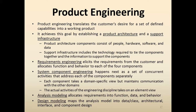The actual activities of the engineering disciplines take on an element view. Analysis modeling allocates requirements into functions, data, and behavior. Design modeling maps the analysis models into data classes, architectural interface, and component design. In product engineering, you have to focus on requirement engineering, system component engineering, analysis modeling, and design engineering — all of these are important to focus on while working on a product, as they are essential to achieve the goal.